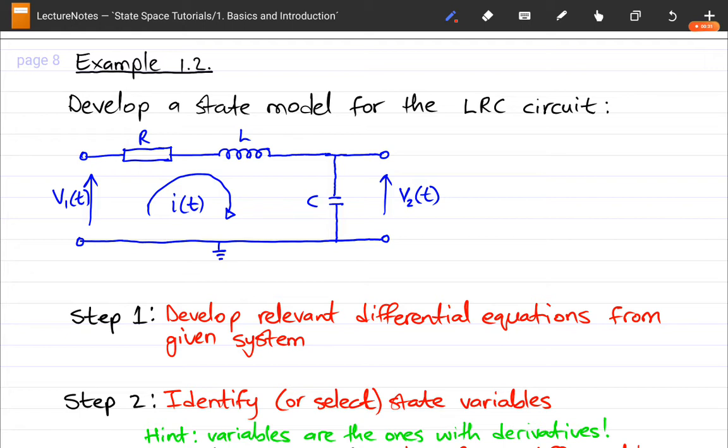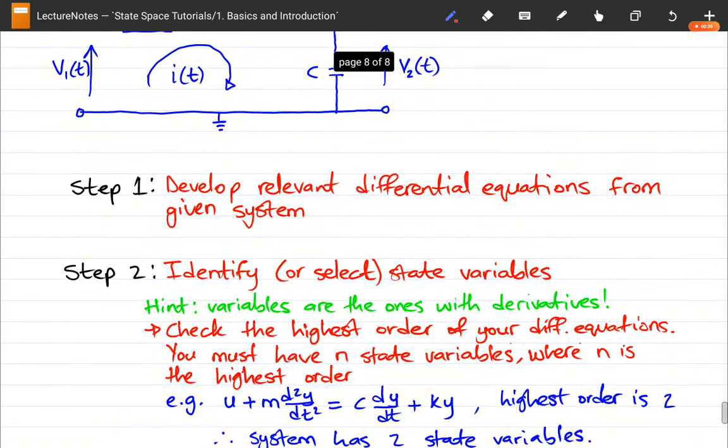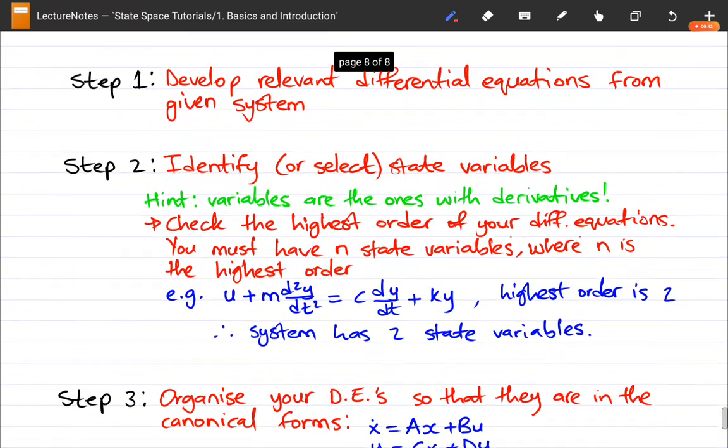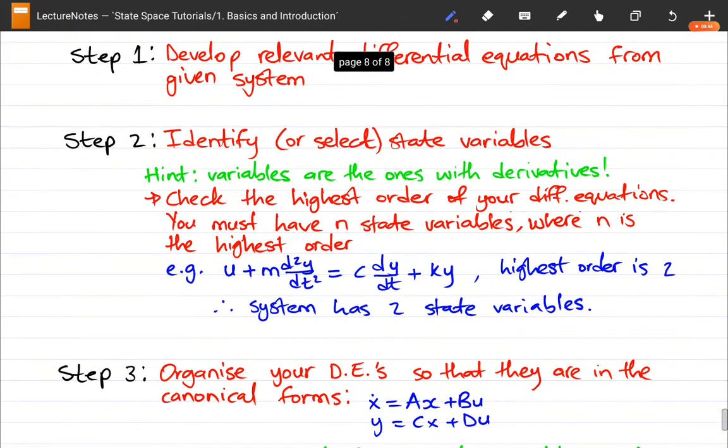I feel like I poorly explained the steps in the previous example, and I want to spend a bit of time re-explaining those steps. I've actually added a bit more notation so that it can be more obvious. In the previous example, I said that the first step is to develop relevant differential equations. This is because our state space model requires that we have differential equations with respect to time.